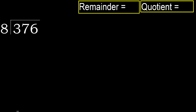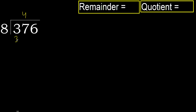376 divided by 8. 3 is less, therefore next: 37 is not less. With 37, 8 multiplied by which number is nearest to 37 but not greater? 8 multiplied by 5 is 40, which is greater. 8 multiplied by 4 is 32, which is not greater.